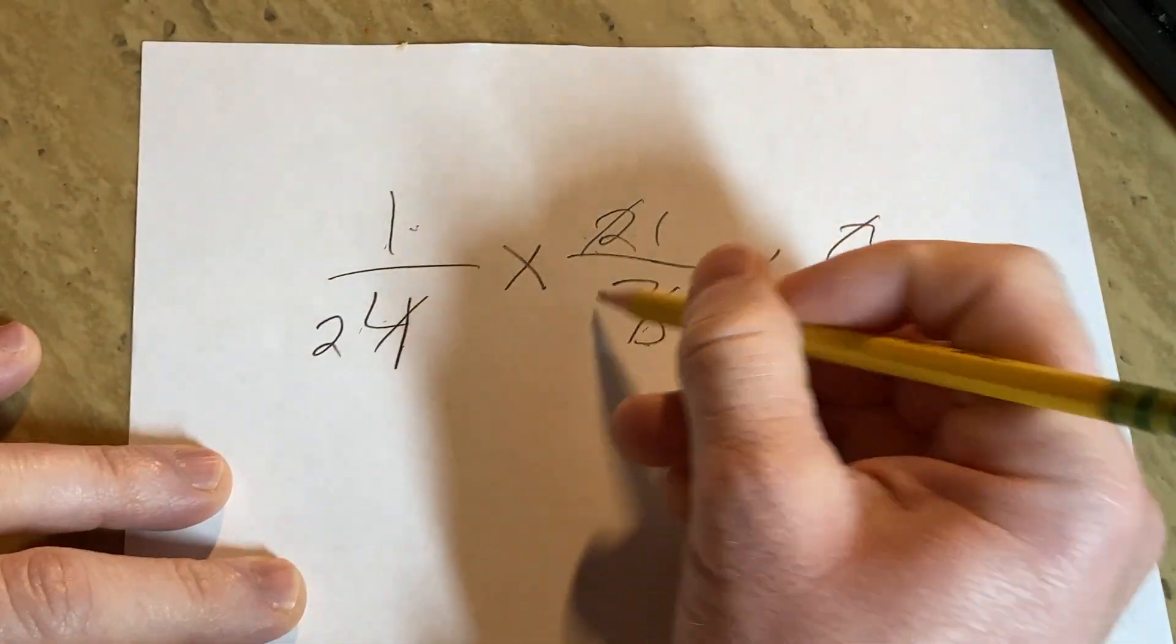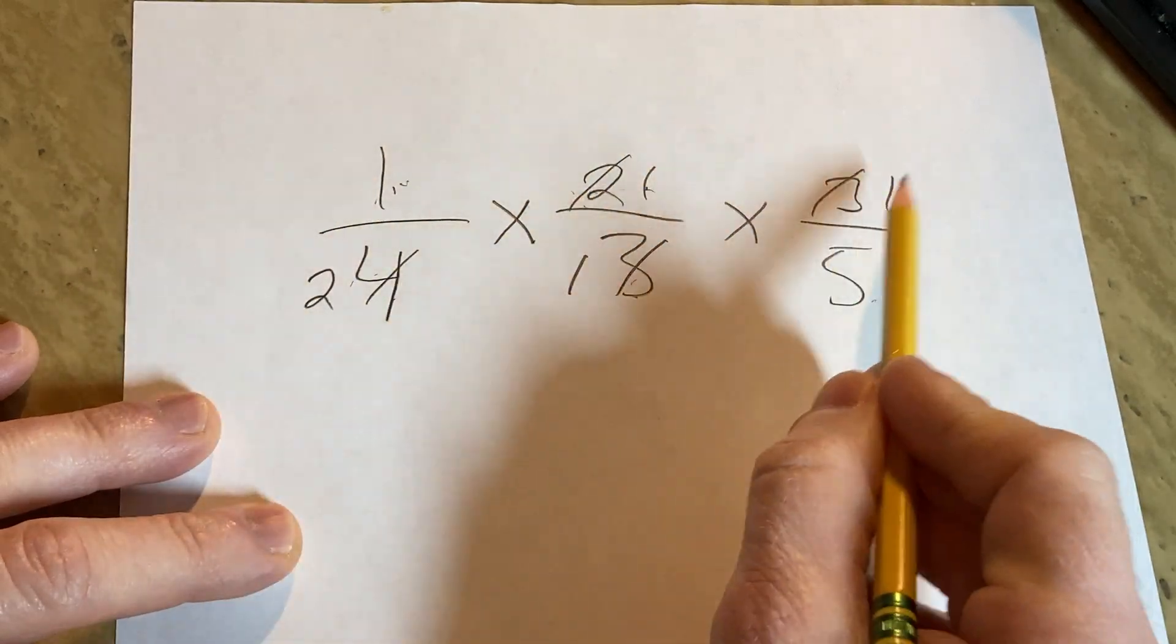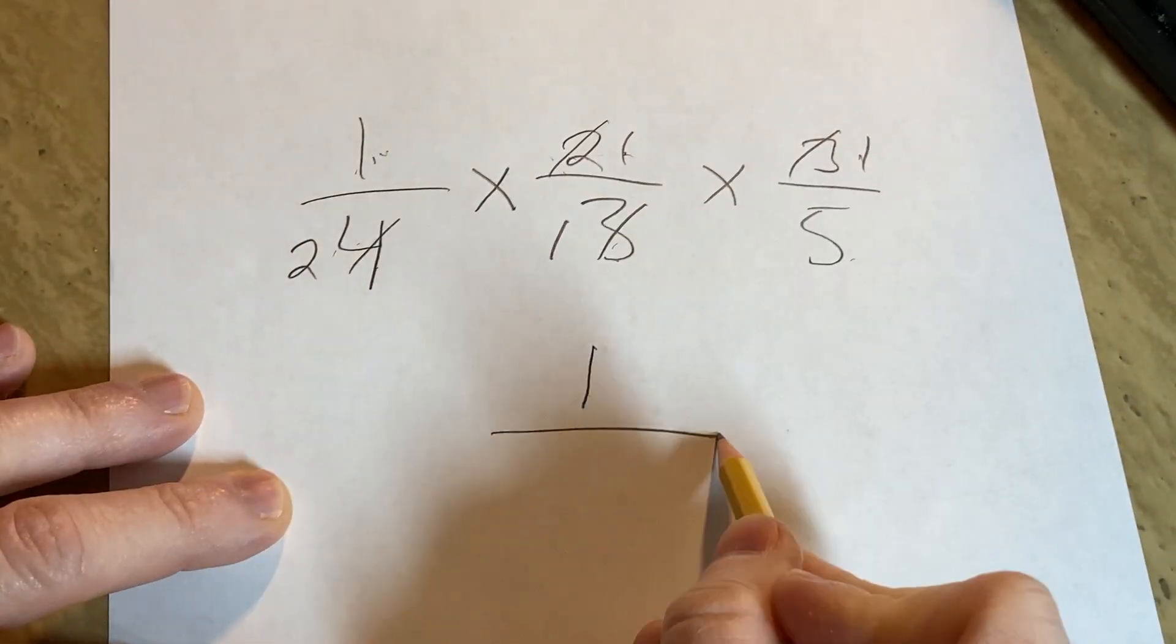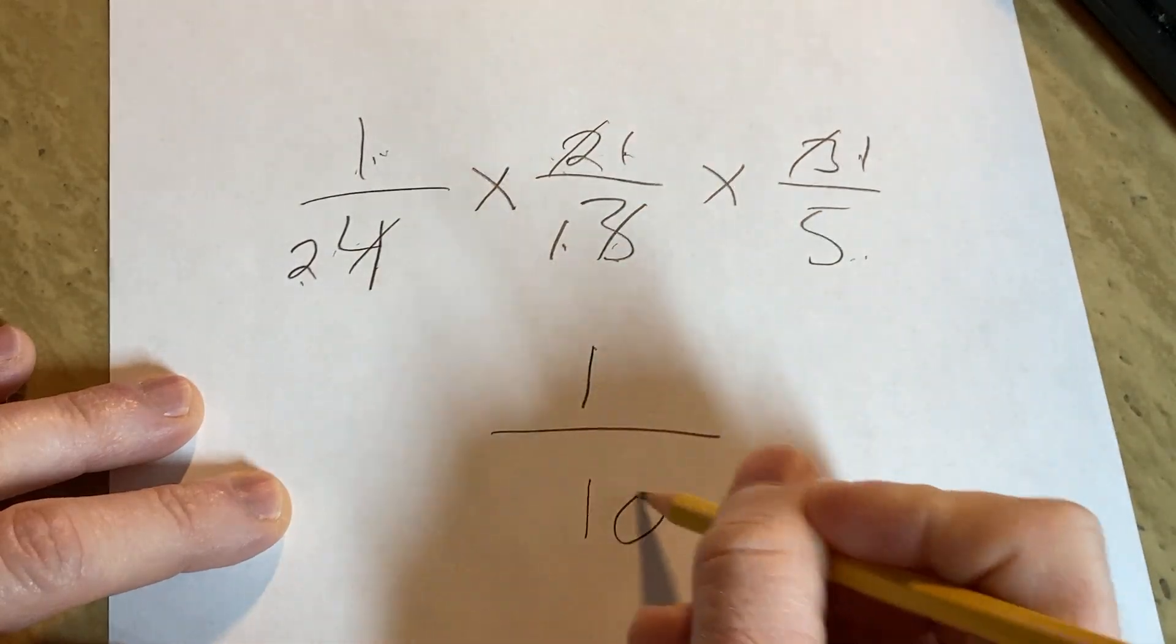And then 3 and 3, those become 1s, and that's pretty much it. So we've got 1 times 1 times 1, which is 1, over 2 times 1, which is 2, times 5, which is 10. So 1 over 10.